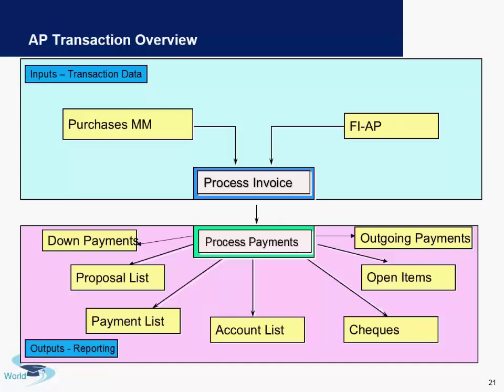For example, if a vendor has sent you goods worth $100 and you have made a payment of only $50, then $50 will be a pending open item and will always be shown in red in your account balances. We will look into this in the forthcoming slides.